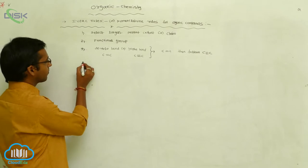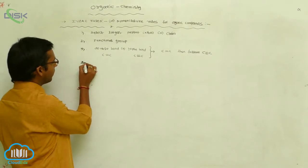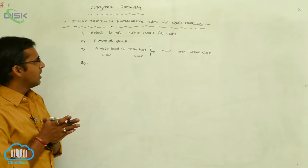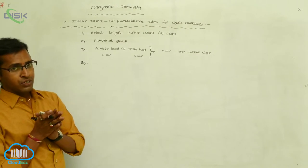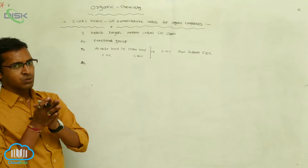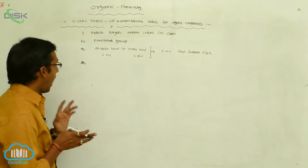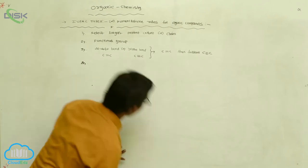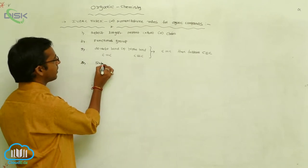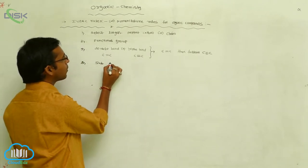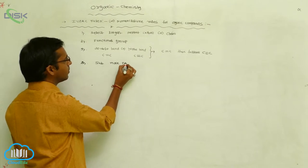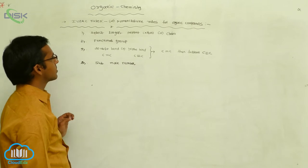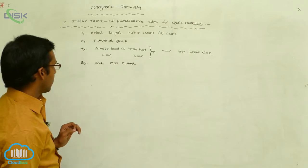Next, in a carbon chain, first select the longest carbon chain, identify the functional group present, and give the lower number to the functional group. The substituent generally gets a higher number — more preference is given to the functional group over the substituent.